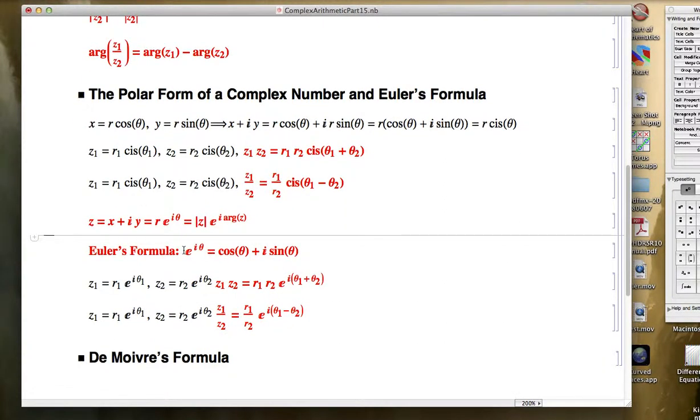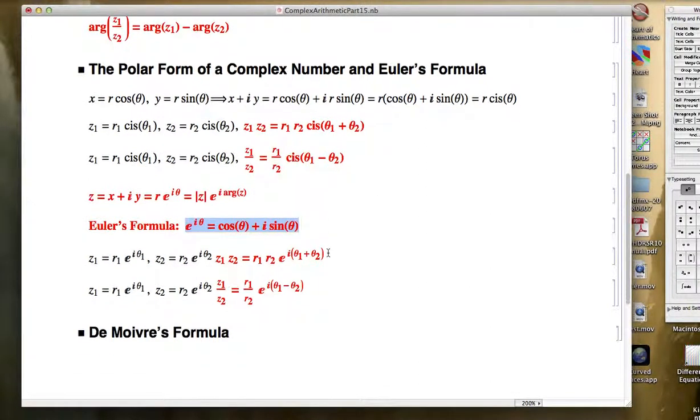Euler's formula is what allows you to represent a complex number in polar form in this way. I didn't derive Euler's formula. I mentioned, since I'm following the Saff and Snider book, that you can derive it using Taylor series for e to the z, cosine z, and sine z, at least if you accept those series representations and the manipulation of them. But it is definitely an important formula to know and be able to use. Here are our fundamental properties written in terms of polar coordinates involving e to the z, the exponential function.